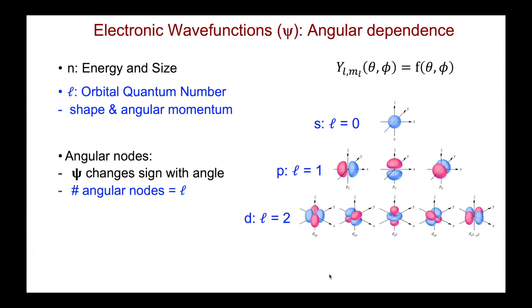And then when we go to the d orbital, with l equals 2, there are two angular nodes.